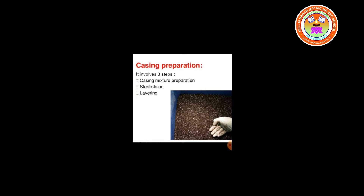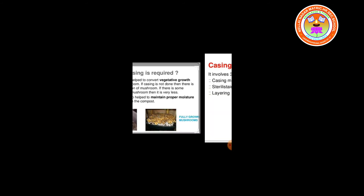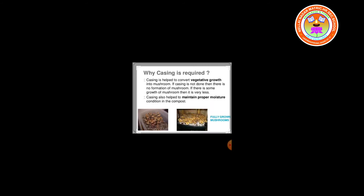Casing preparation involves three steps: casing mixture preparation, sterilization and layering. Why is casing required? Casing helps to convert vegetative growth into mushroom. If casing is not done, then there is no formation of mushroom, or if there is some growth of mushroom, it is very less. Casing also helps to maintain proper moisture condition in the compost.